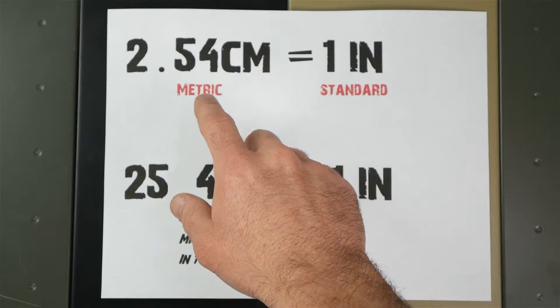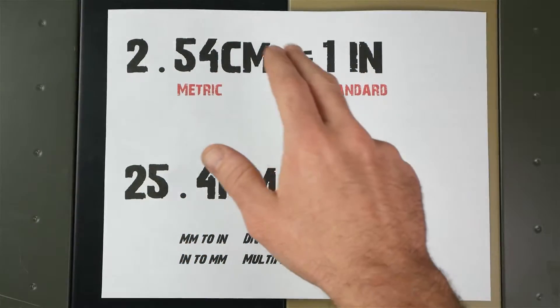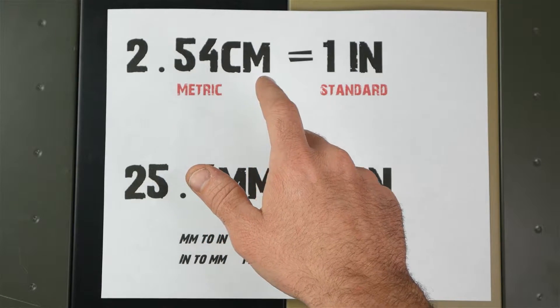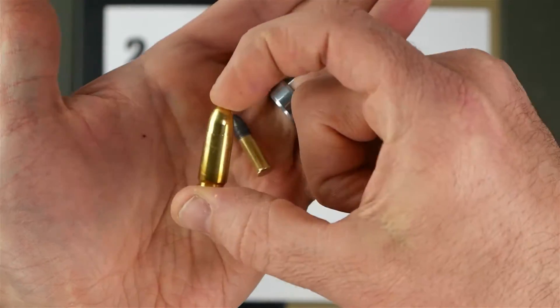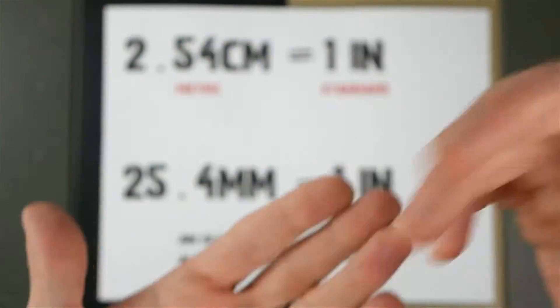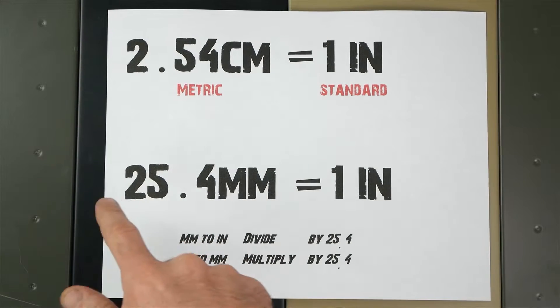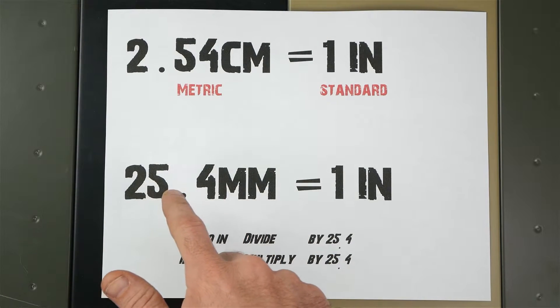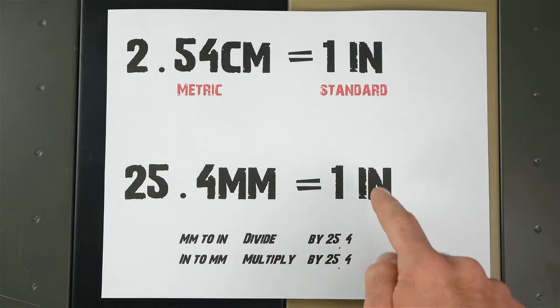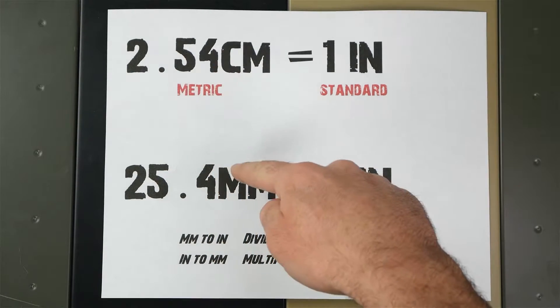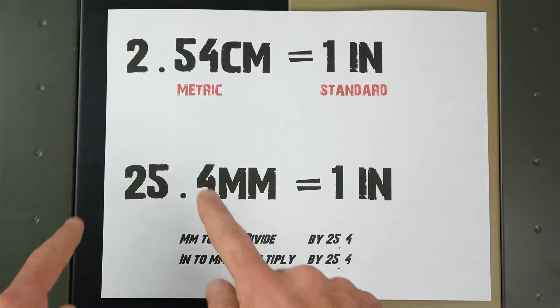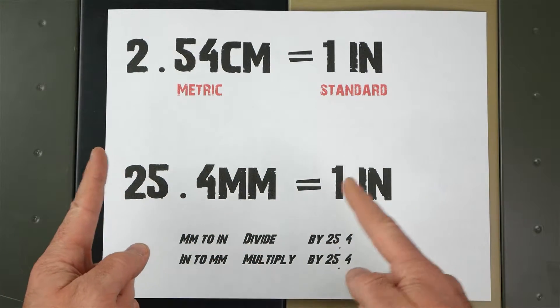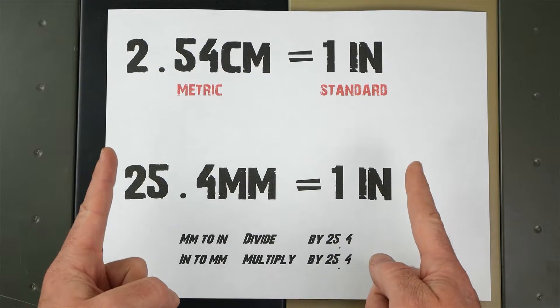The definition of the relationship between centimeters and inches is that 2.54 centimeters equals one inch. We don't normally talk about bullets in centimeters; we talk about them in millimeters—nine millimeter, ten millimeter. So the main conversion is 25.4 millimeters equals one inch. It's the same thing. There's 10 millimeters in one centimeter, so you just move the decimal one place. This is the main definition we're going to use: 25.4 millimeters equals one inch.